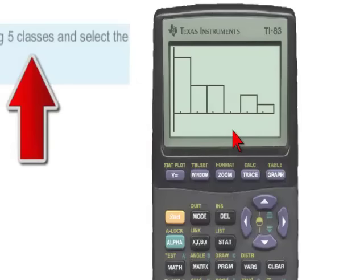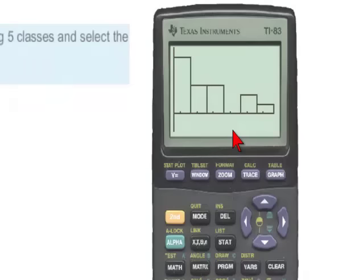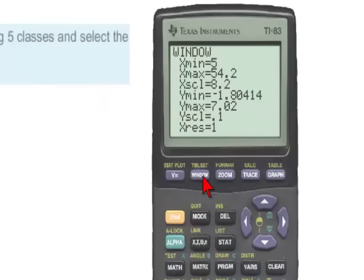However, we want a histogram containing five classes. So we need to make some adjustments to the window. And specifically, the two adjustments that need to be made are to the x minimum and x scale.